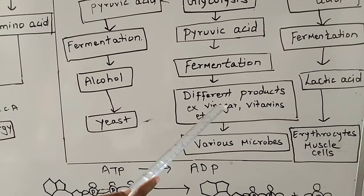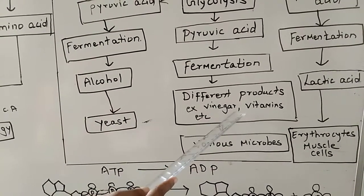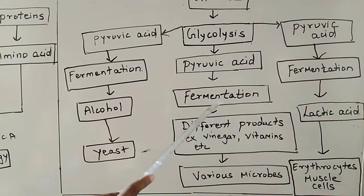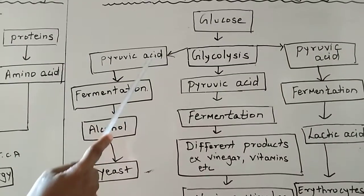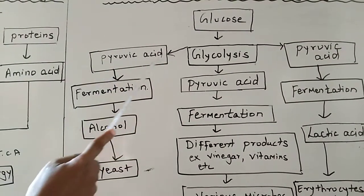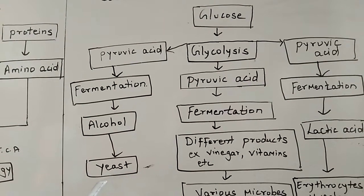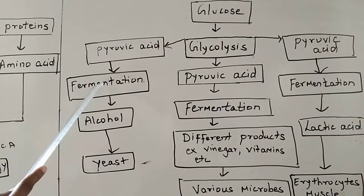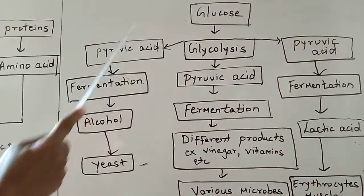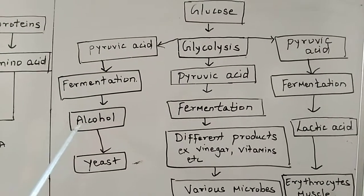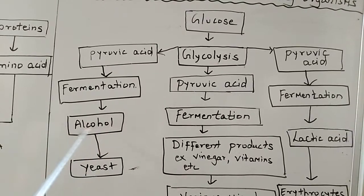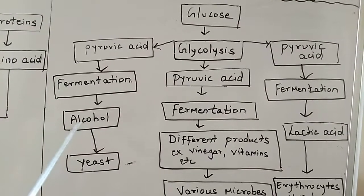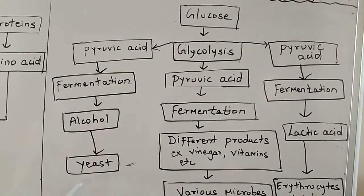Different types of products could be formed such as vinegar, vitamins, etc. In the production of vinegar, glucose is converted to pyruvic acid with the help of glycolysis, and pyruvic acid undergoes fermentation. In another way, glucose gets converted to pyruvic acid with the help of yeast microorganisms. For the production of bread, we add yeast to the dough — that yeast brings about fermentation. Glucose gets converted to pyruvic acid, it undergoes fermentation and there is formation of alcohol — ethyl alcohol, with the formula C2H5OH. So this is also one way of anaerobic respiration.